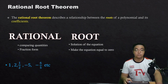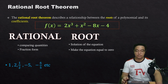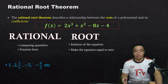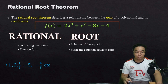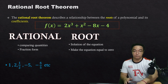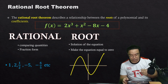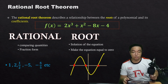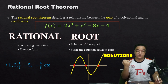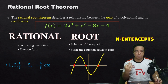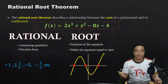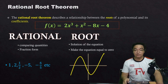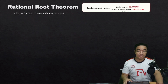For example, in the polynomial 2x³ + x² − 8x − 4, the roots or solutions are the values of x that make it equal to 0. Roots are also where the graph crosses the x-axis, which are also called x-intercepts. So solutions, roots, x-intercepts, and zeros all mean the same thing. Now, how do we find these rational roots?